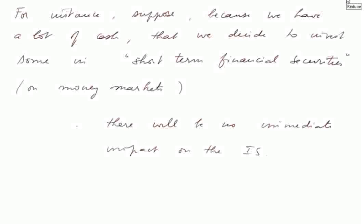For instance, suppose that because we have a lot of cash, we decide to invest some of this cash into short-term financial securities. This is done on what's called the money markets. Well, we shall see that there will be no immediate impact on the income statement. Doing this is called parking money — parking money to make it work.